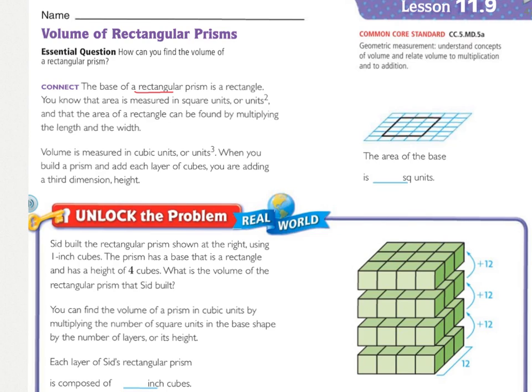Now the two can connect, because you're only multiplying two numbers, and so that's why you have area measured as squares. Volume is measured in cubic units, or units cubed. That's the exponent 3 here. When you build a prism and add each layer of cubes, you are adding a third dimension, height.